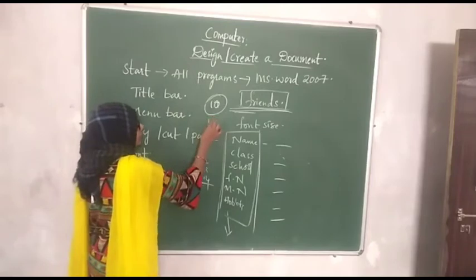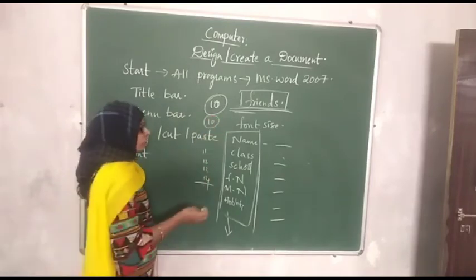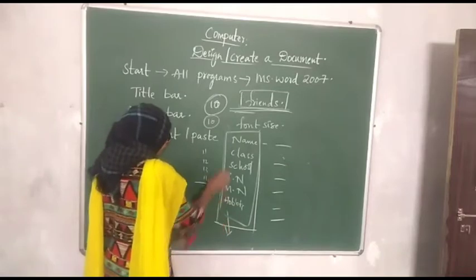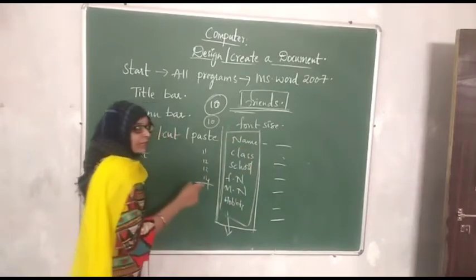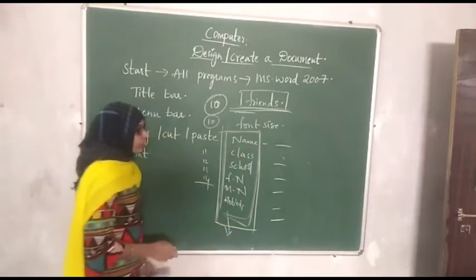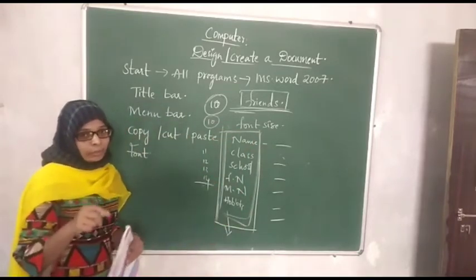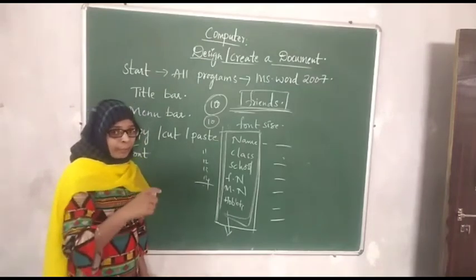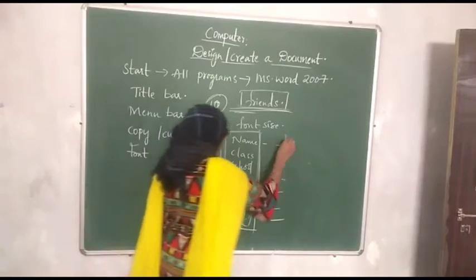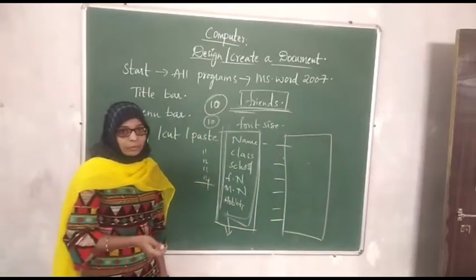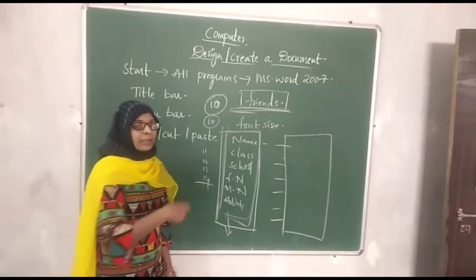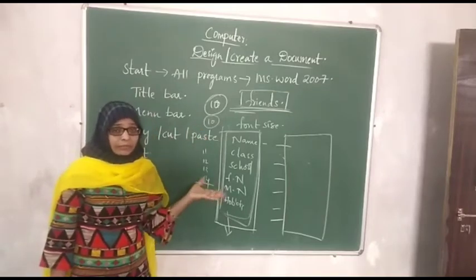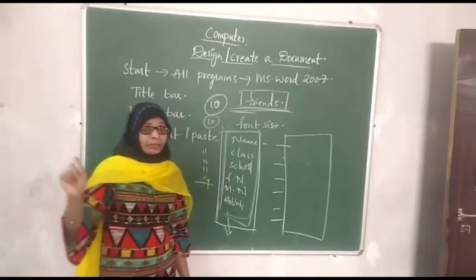Once you drag and select the content, it gets selected. Then click on Copy — the matter gets copied. Then scroll down and click on Paste — the same thing will appear one more time. You can paste it as many times as you want. In a notebook, you would have to write it 5 or 10 times by hand, but with a computer you need not type it again and again.